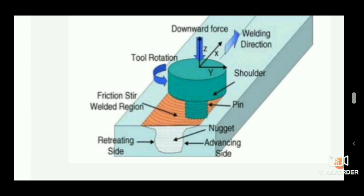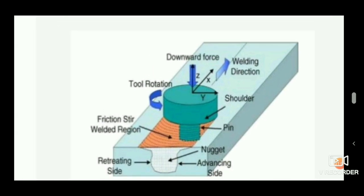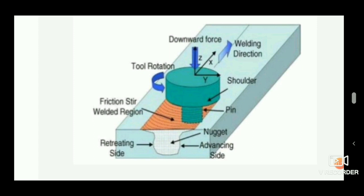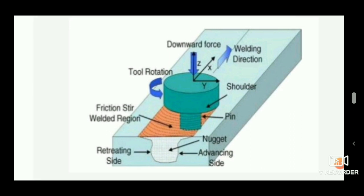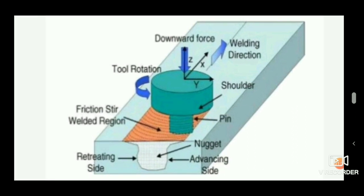The tool is attached to the spindle of a machine. It rotates and moves in a forward direction, creating friction. The shoulder is in contact with the top face of the metal and moves in a straight run to weld both metals. A downward force is applied to make a punch, and then the tool moves forward.